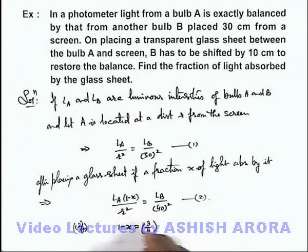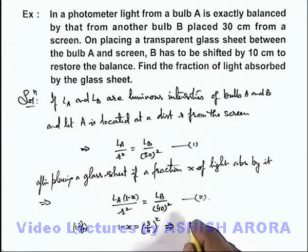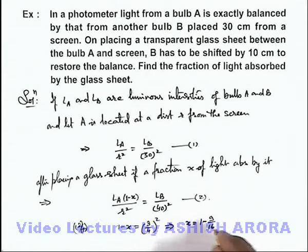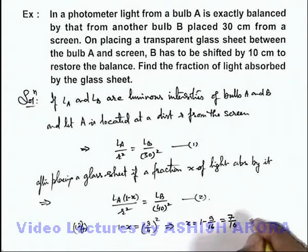3 by 4 whole square, and on simplifying we are getting x equals 1 minus 9 by 16, that is 7 by 16. Numerically it is 0.44.